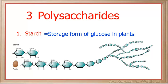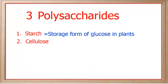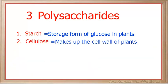The second polysaccharide you need to know is called cellulose. Cellulose makes up the cell walls in plants. We cannot digest cellulose because our system is not designed to break the types of bonds found between the monosaccharides that make up cellulose.